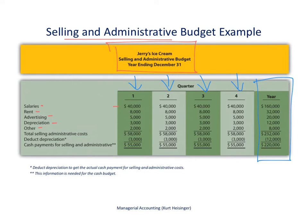The selling and administrative costs that appear on the income statement come from the total selling and administrative costs line in this budget. At the very bottom is an adjustment to arrive at actual cash payments for selling and administrative costs — those cash payments are needed for the cash budget, covered in a separate lecture. The total is $58,000 per quarter and $232,000 for the year.